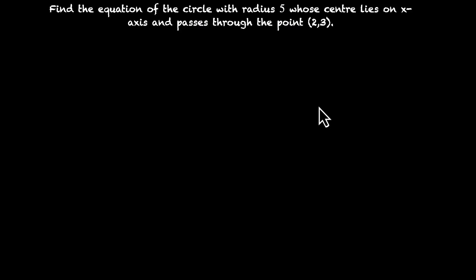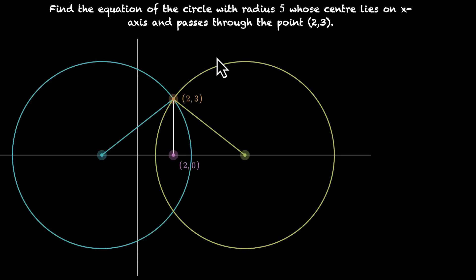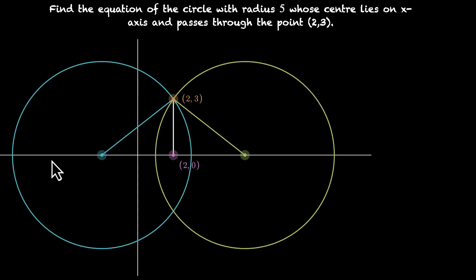Let's do this together. Focus on the point 2 comma 3. The center is 5 units away from 2 comma 3 and lies on the x-axis. It could be on the left-hand side of 2 comma 3 or on the right-hand side. That's why we have not one but two circles here — both have their center on the x-axis at a distance of 5 units from 2 comma 3.